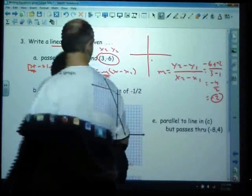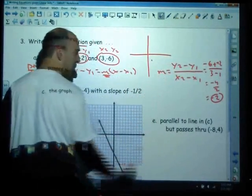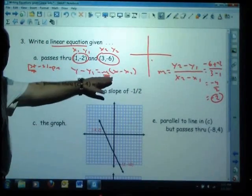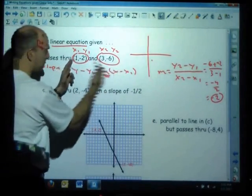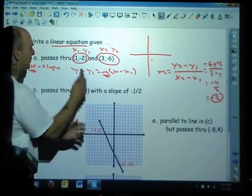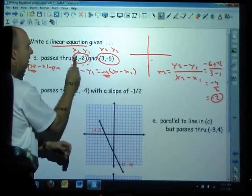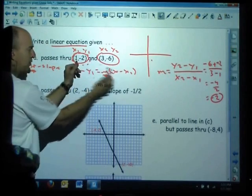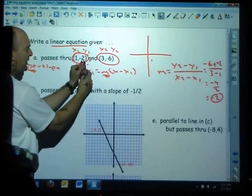That's the slope of this line. It's going down as it goes over, down 2 over 1. With that information I can simply take one of these two points. I always take the easier one, which would be this one.